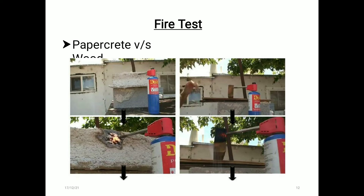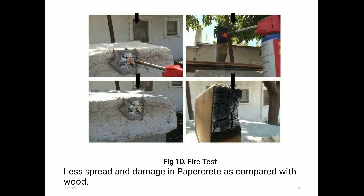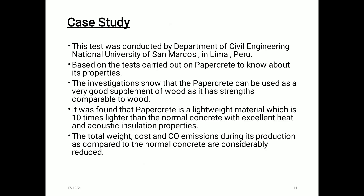Now, through this figure we are representing a fire test between Papercrete and wood. On the left side we are representing the fire test of Papercrete, and on the right side, the fire test of wood. You can see through this figure that the damage and the spread of fire was less in Papercrete as compared with wood.